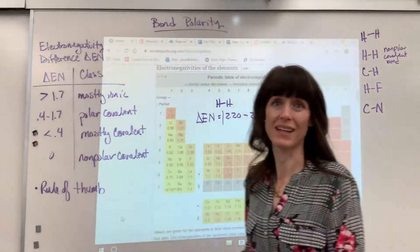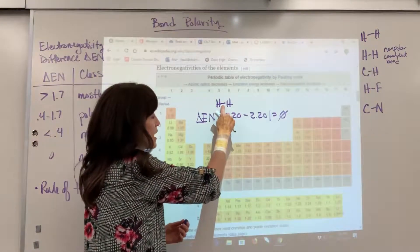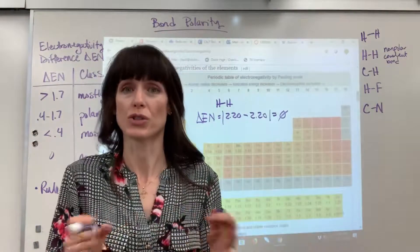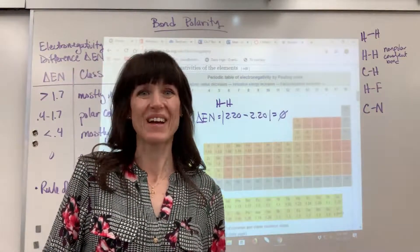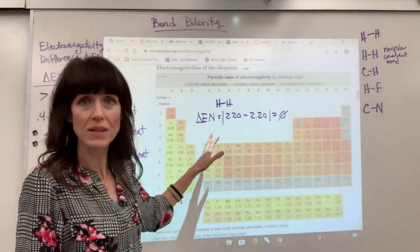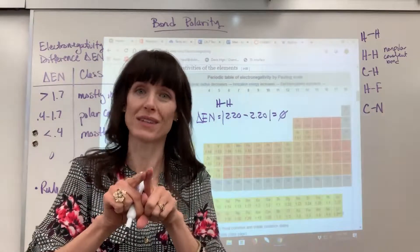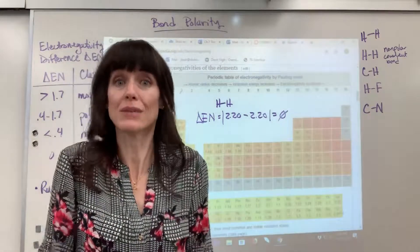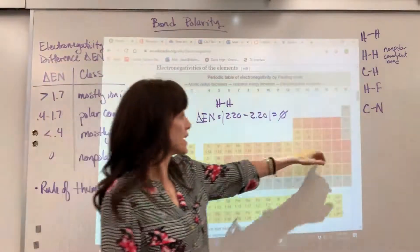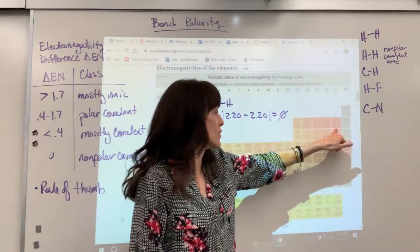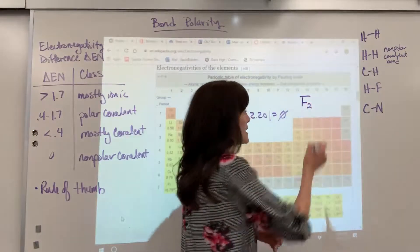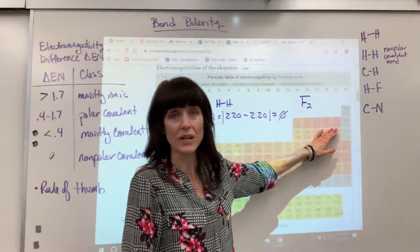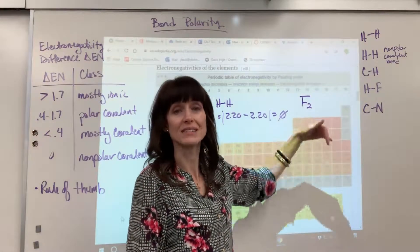An important takeaway: any diatomic element — when the same element shares with itself — will always have an electronegativity difference of zero. For example, fluorine F₂: 3.98 minus 3.98 is zero — that's a nonpolar molecule. Even the most electronegative element shares equally with itself because both atoms have the same electronegativity.